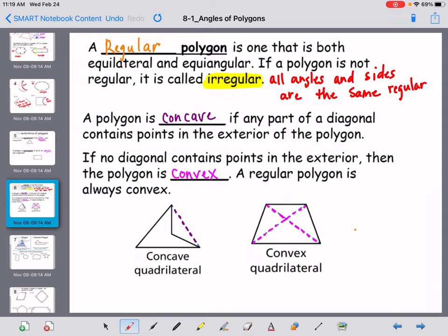We also can refer to polygons as being concave or convex. A polygon is concave if any part of a diagonal contains points in the exterior of the polygon. So what does that mean? That means that if I drew a diagonal from this point to this point, that diagonal would be on the outside of the polygon. So that's how we can determine if it's concave.